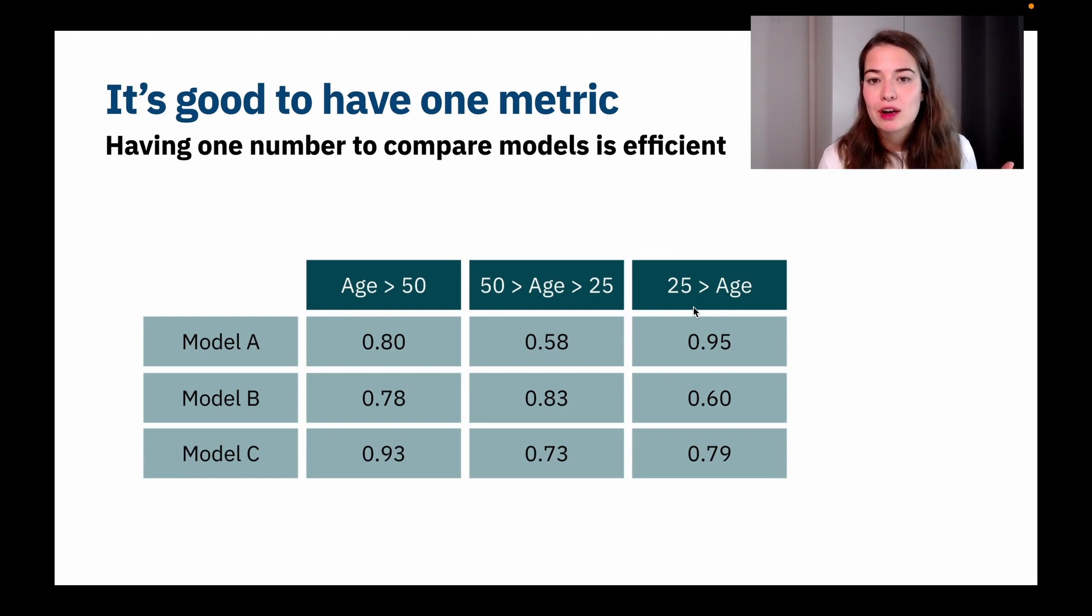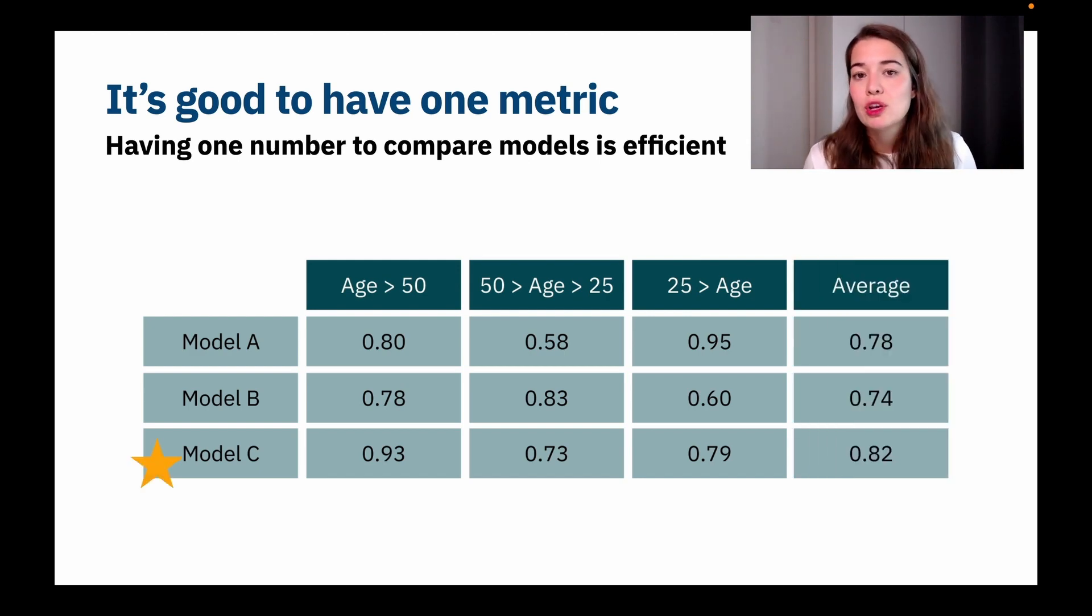So it would be very hard to choose a model here because model A performs the best for people who are younger than 25, but model C performs the best for people who are older than 50. Of course, if you have a really strong preference that you want to definitely target people from age of 25 to 50, then you might go ahead and choose option B. But what you can do if you want to optimize for all of these groups of people, you can just take the average of these models' accuracies and then choose the one that gives you the best average in all of these ages.